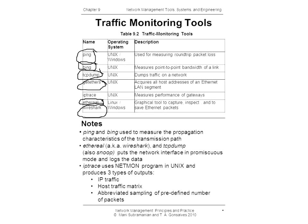The getEthers command discovers the IP address and Ethernet address pairs of all hosts on a local area network segment. It generates ICMP echo request messages, similar to ping, and the replies are compared with the ARP table to determine the Ethernet address of each responding system. Next we have the IP trace tool, which uses the NetMon program in the Unix kernel and produces three types of outputs: IP traffic, host traffic matrix output, and abbreviated sampling of a predefined number of packets.